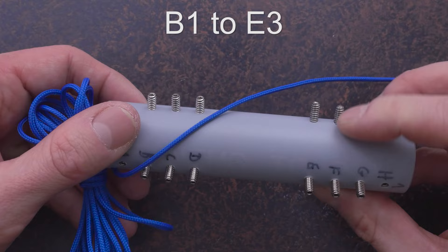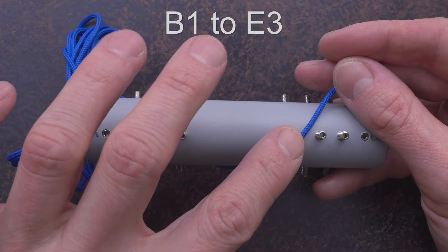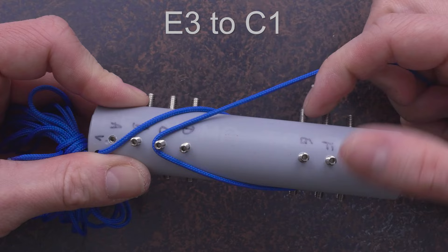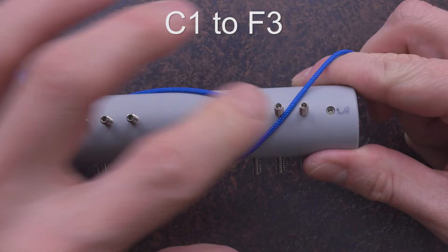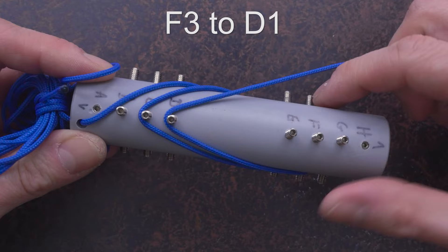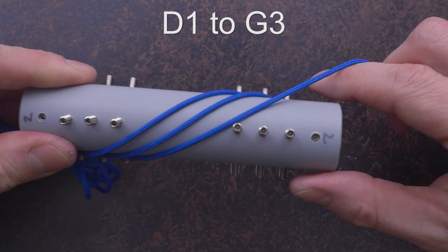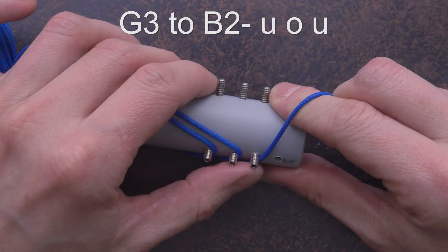We begin tying at B1. We move from B1 to E3, then from E3 to C1, from C1 to F3, from F3 to D1, from D1 to G3.